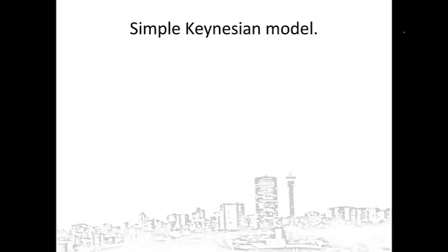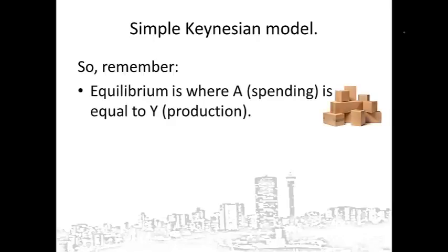The basics of the model is that equilibrium is where spending is equal to production, meaning when inventories are constant. Firms are producing the same inflow of goods and services that households are buying, so production and spending are equal and we are in equilibrium.